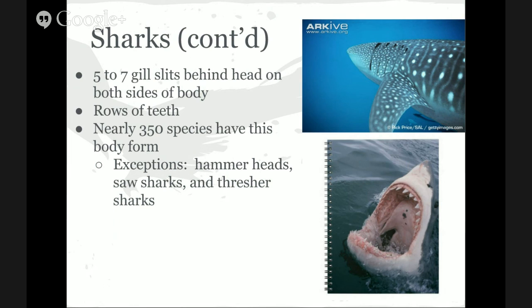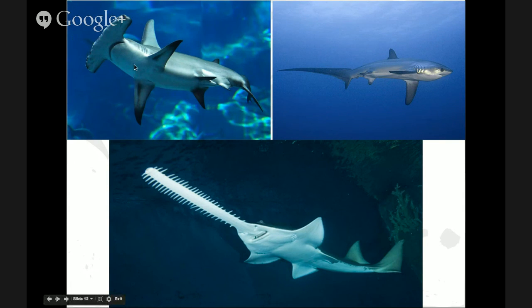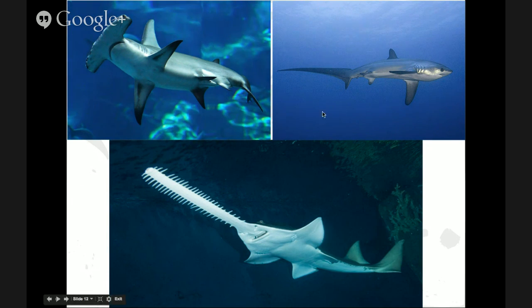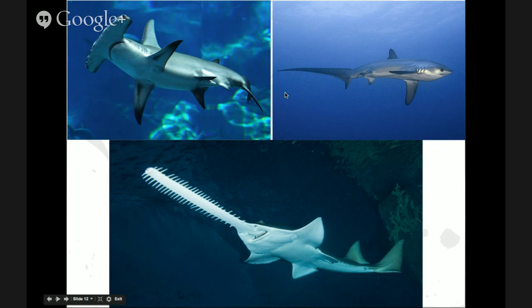Most sharks exhibit this standard body plan, but some exceptions are the hammerhead, saw shark, and thresher shark. Hammerhead sharks have a wide, flattened head that acts as a rudder and also widens their sensory organs for better reception — they are extremely intelligent animals with very well-developed sensory organs. Saw sharks have that long, flattened head armed with teeth that look like a saw. The thresher shark has a very long upper lobe on its tail, which it uses to herd and stun fish that it is preying on.